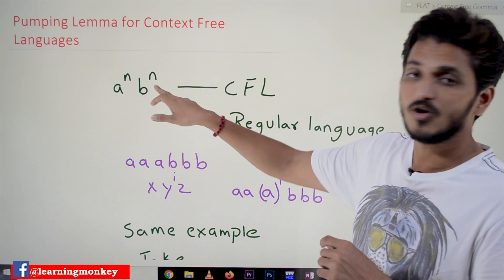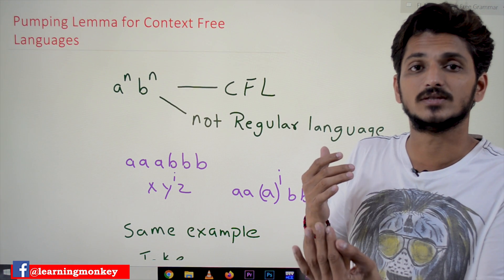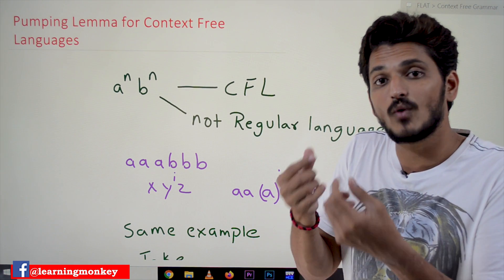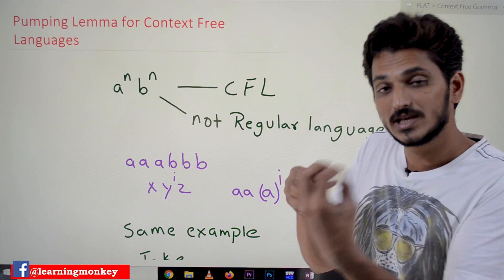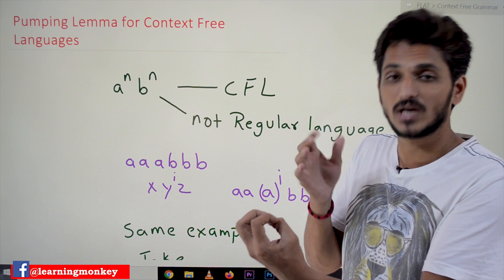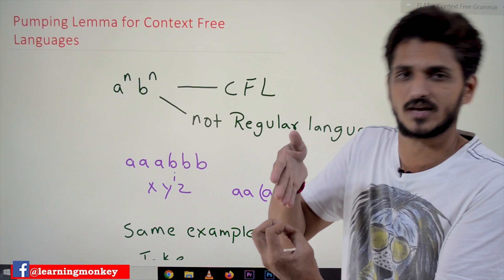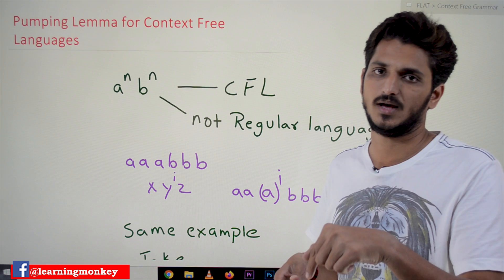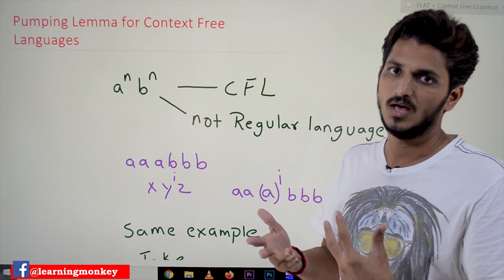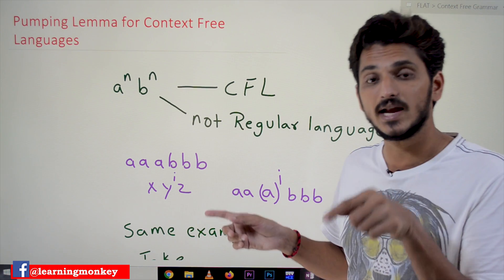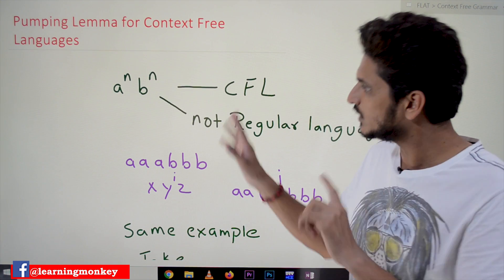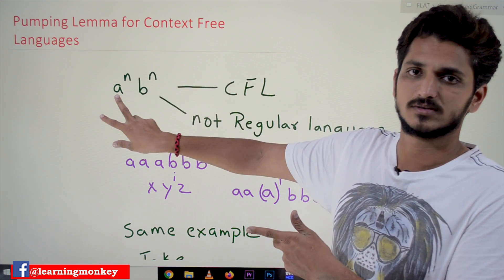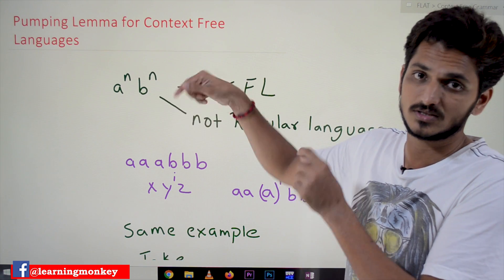In regular languages we cannot do the equality count — A followed by equal number of B's. We cannot do the counting equality check because we don't have memory in a finite automaton. That's why we cannot check. But in context free languages we have a memory stack, and that's why we can check the count equality for two symbols. This point we discussed in our last class.